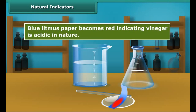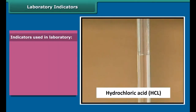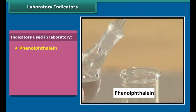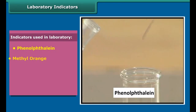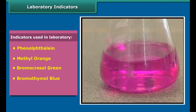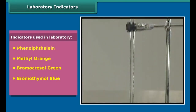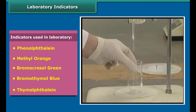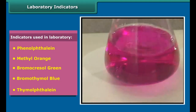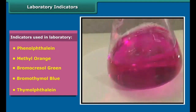Dip a clean stirring rod into the baking powder solution and touch the wet rod to red litmus paper — it turns blue, indicating the baking powder solution is alkaline in nature. Then dip a clean stirrer into vinegar solution and place one drop on blue litmus paper — it turns red, indicating vinegar is acidic in nature.